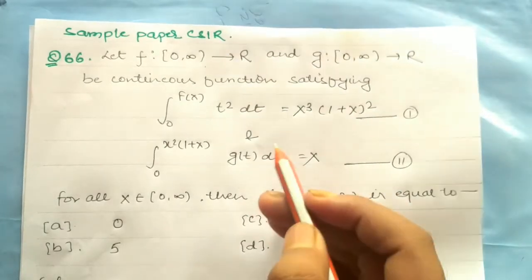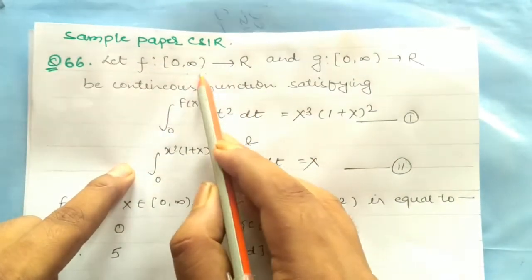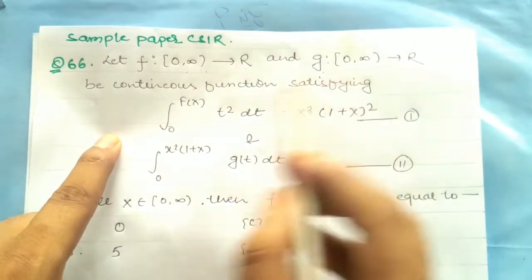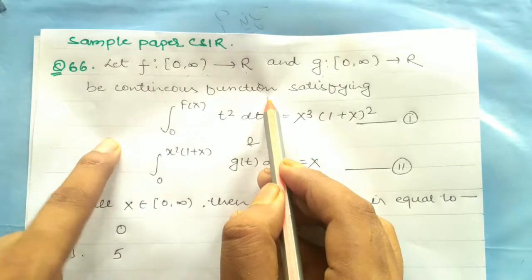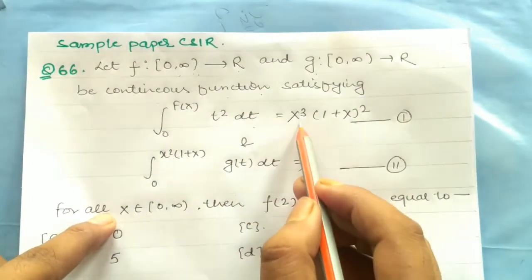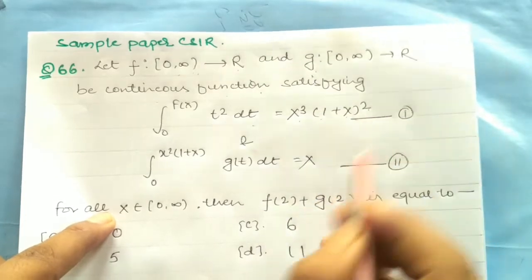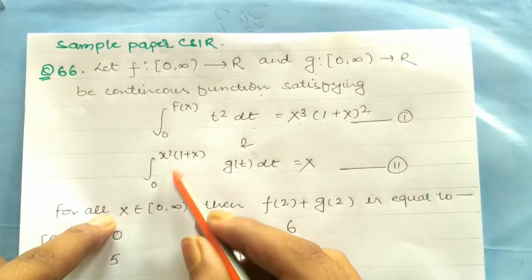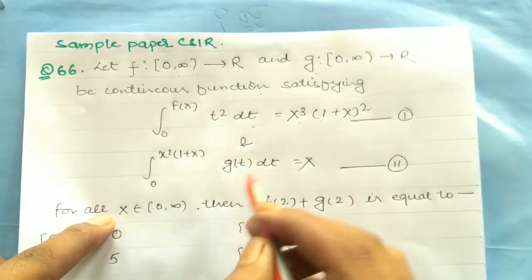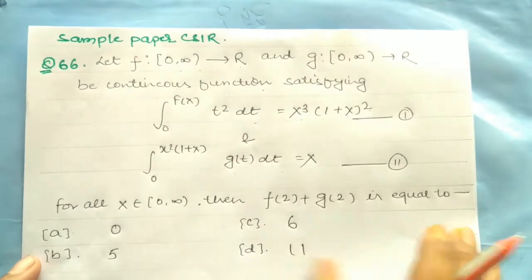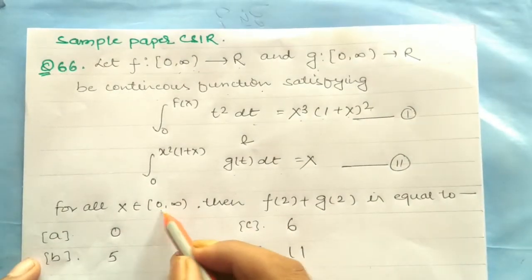In the question, let the function f: [0,∞) → R and g: [0,∞) → R be continuous functions satisfying: integral from 0 to f(x) of t² dt equals x³(1+x)². This is equation 1. The other function: integral from 0 to x²(1+x) of g(t) dt equals x. This is equation 2. For all x belongs to [0,∞).